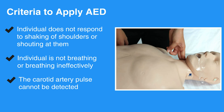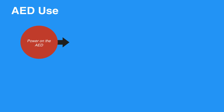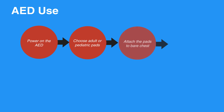Let's review the basic steps of using an AED. First, power on the AED. Choose adult or pediatric pads. Attach the pads to the bare chest and make sure the cables are connected.